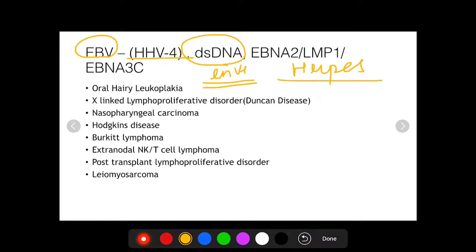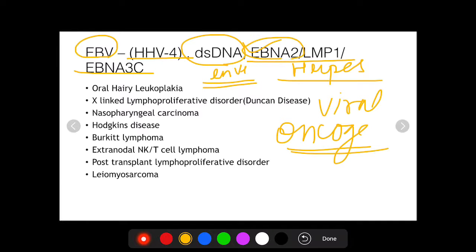Now what makes EBV an oncogenic virus? Any oncogenic virus is oncogenic in nature because of the presence of viral oncogenes. The viral oncogenes associated with Epstein-Barr virus are EBNA2, LMP1, and EBNA3C. These three genes can be asked in your future examination, so remember them.